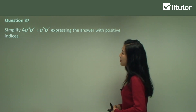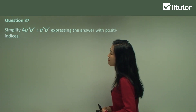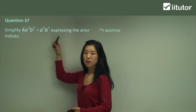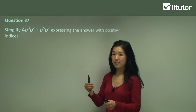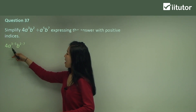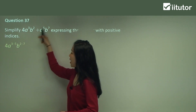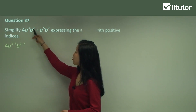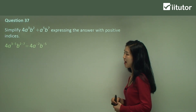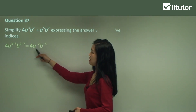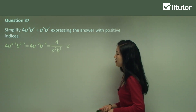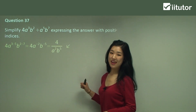Question 37. We're dividing this time, so gather A's together and B's together, but this time we subtract the indices because we're dividing. 4 leaves it as it is. A to the power of 3 minus 5 and B to the power of 2 minus 7. Simplify, and see how we have negative indices for A and B — just move them down to the denominator. So A and B have both positive indices now.